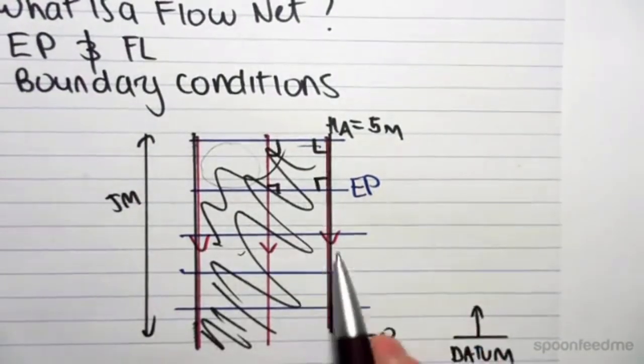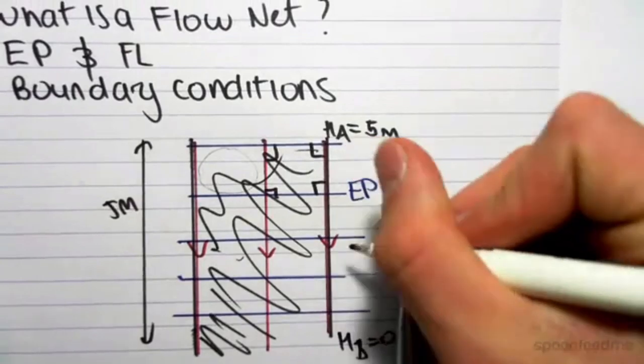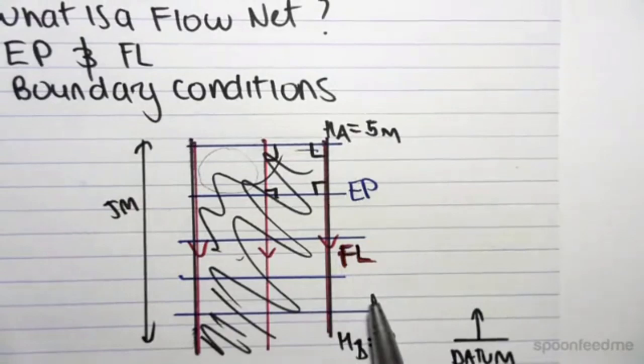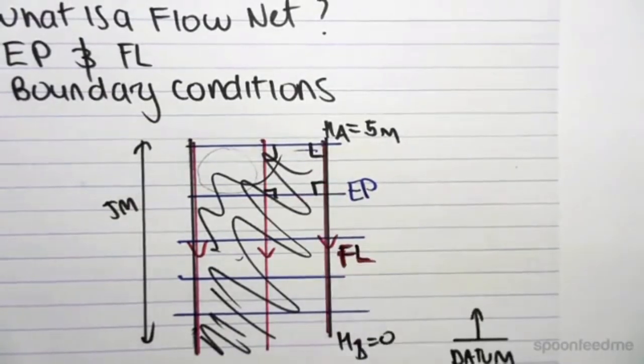So, EPs and flow lines. So this is a flow line. That red line. So the EP and flow lines always have to be perpendicular to one another. And they have to form curved linear squares.